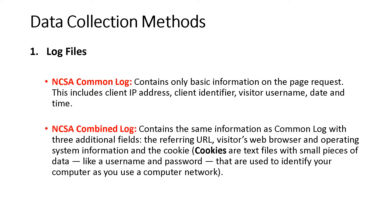Different data collection methods exist in web analytics. The first is log files. The first type is NCSA common log, which includes the client IP address, client identifier, visitor username, and date and time. Next is NCSA combined log, which in addition to common log data includes the referring URL, visitor's web browser, operating system information, and cookies. Cookies are text files with small pieces of data, similar to a username or password.